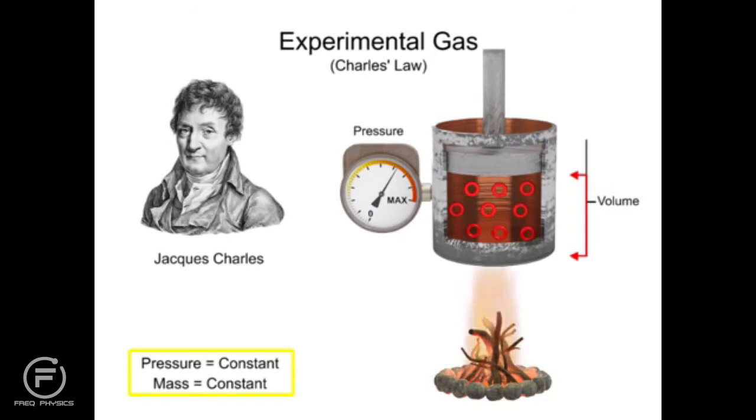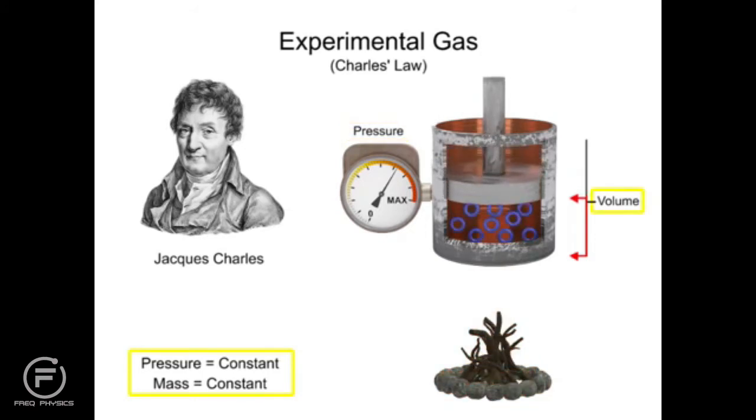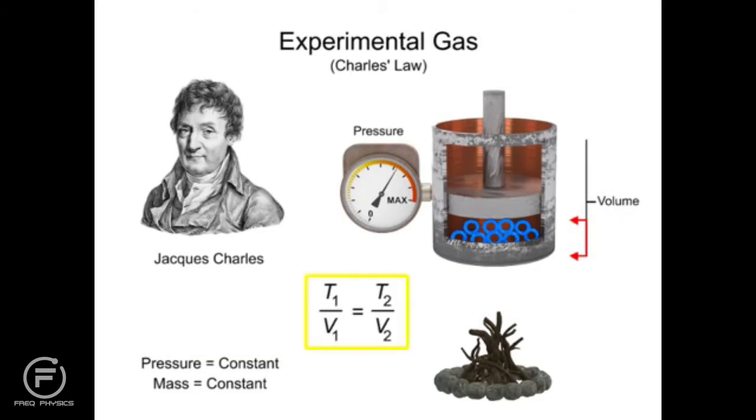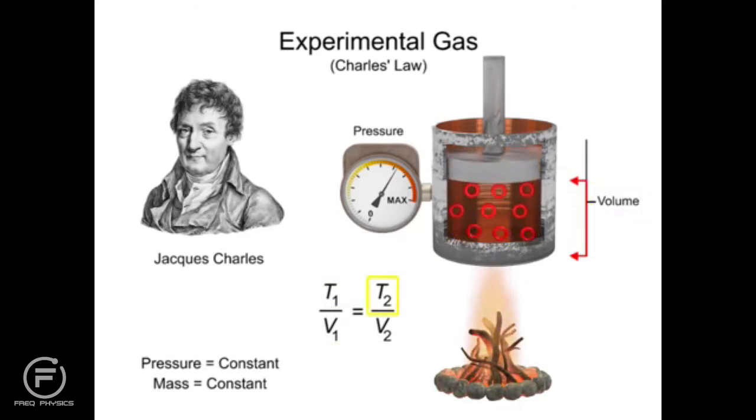Additionally, the inverse is true. If the pressure of a gas is constant and the temperature is lowered, the volume will also lower. Charles' Law can be expressed mathematically as the ratio of the temperature at state 1 to the volume at state 1 is equal to the ratio of the temperature at state 2 to the volume at state 2. This law is true as long as the pressure and mass remain constant.